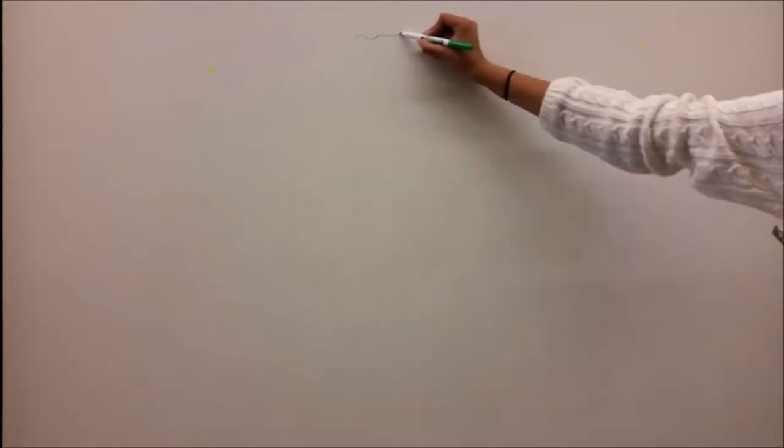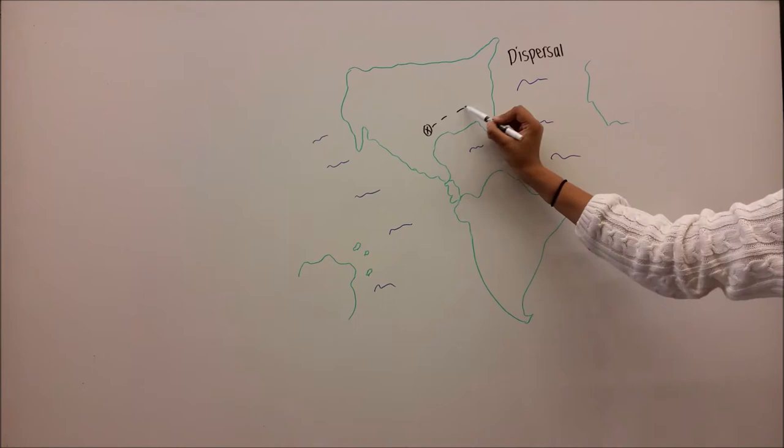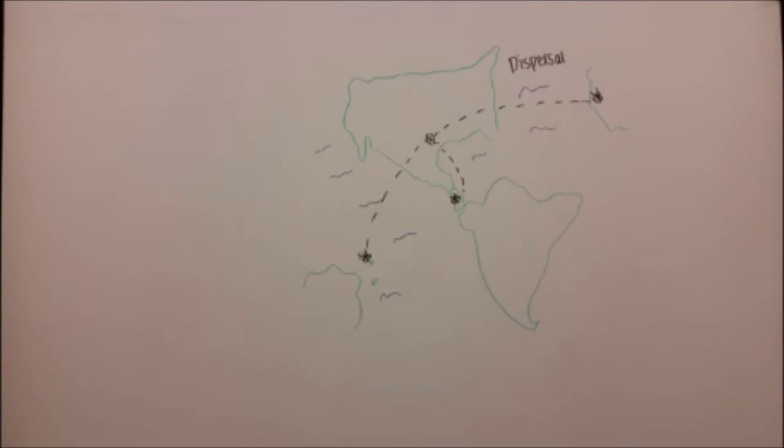Monarch butterflies show that they were a migratory species originating in southern North America and Mexico that then dispersed worldwide and have now established several distinct populations. This map shows three separate dispersal events leading to the formation of populations in the Atlantic, Pacific, and Central America.